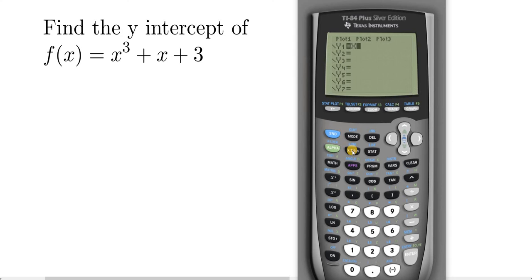So it would be x, that's the variable key, and then you have to press the exponent key. That's right here, that's the caret key. And then it takes you to this exponent region here, so 3. Now, to come down from the exponent area, you have to hit the right arrow key, so I'm going to press that. And then we have plus, and then we have x, and then we have plus, and then we have 3.